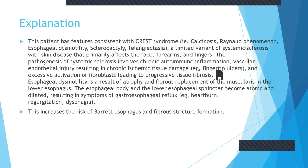The patient has features of CREST syndrome: calcinosis, Raynaud's phenomenon, esophageal dysmotility, sclerodactyly, and telangiectasia. The pathogenesis of systemic sclerosis involves chronic autoimmune inflammation, vascular endothelial injury resulting in chronic ischemic tissue damage, and excessive activation of fibroblasts leading to progressive tissue fibrosis. Esophageal dysmotility is a result of atrophy and fibrous replacement of the muscularis in the lower esophagus. The esophageal body and lower esophageal sphincter become atonic and dilated, resulting in GERD-type symptoms. This also increases the risk of Barrett's esophagus and fibrous stricture formation.